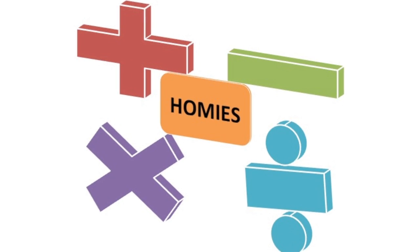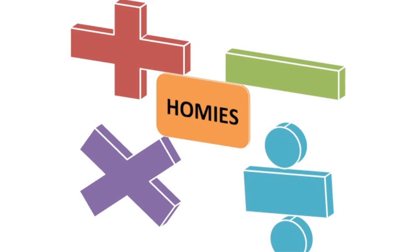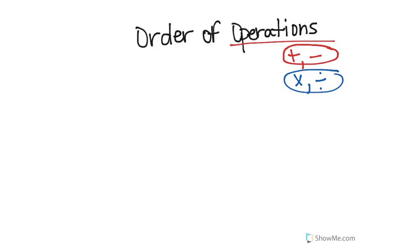Think about it — when you were in first or second grade you used to do simple math problems like 2 plus 7, which is 9. And then your teacher would ask you to check your work. Well how would you do it? You would check it by doing the opposite. What's the opposite of addition? Subtraction. 9 minus 7 is 2. That's where fact families come into play. You see how they have each other's back?